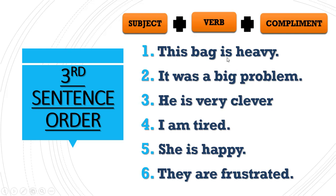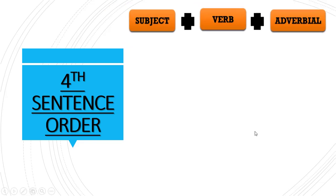The to-be verbs — also called state verbs — are: is, am, are, was, were, will be, and shall be. We will be discussing and learning these in detail in our next classes.